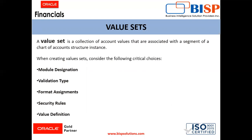Validation type is assigned to the value set. These can be independent — the values are independently selected when filling out the segment in an account combination. There can be another type which is table — the values that are stored in the external table to facilitate maintenance and sharing of reference data. Generally we use independent validation only for the accounting key flex field value sets.